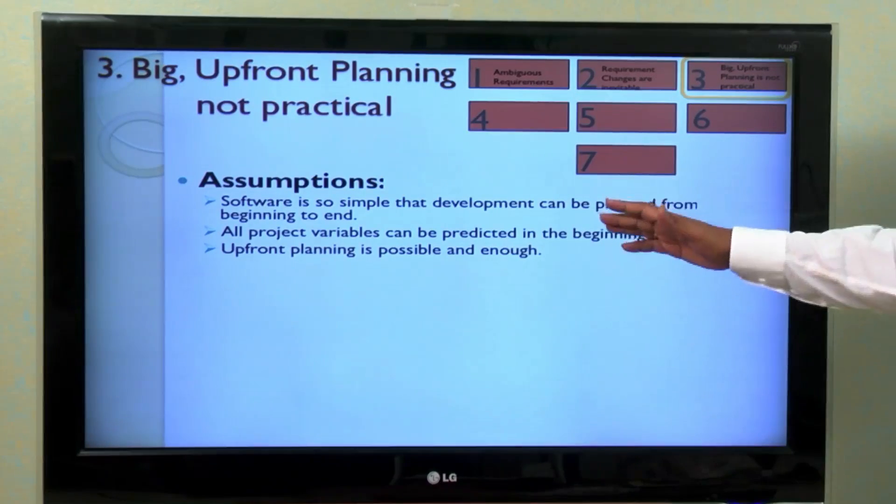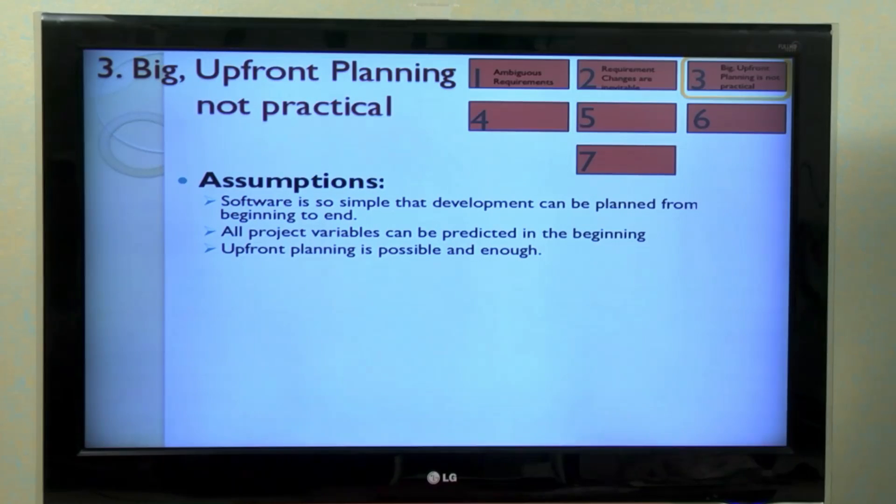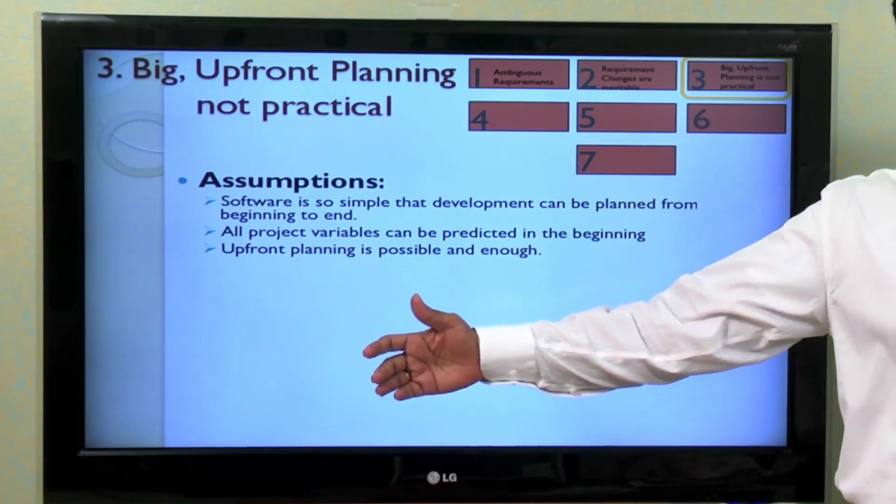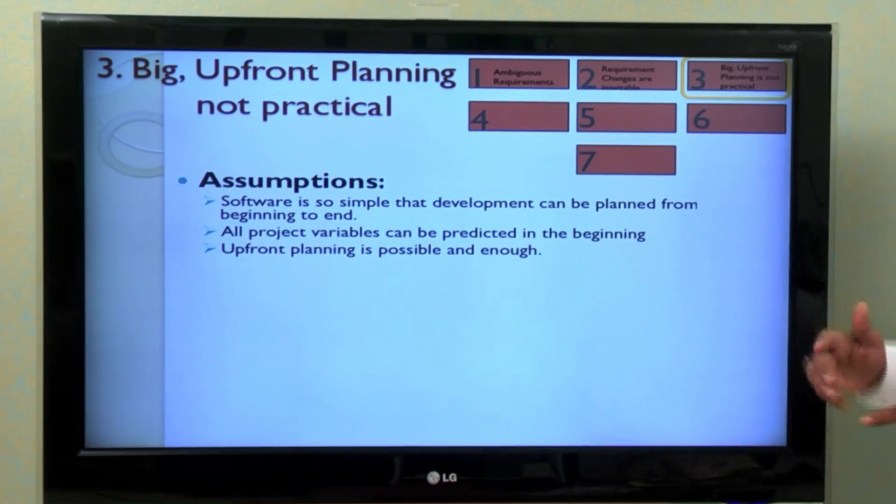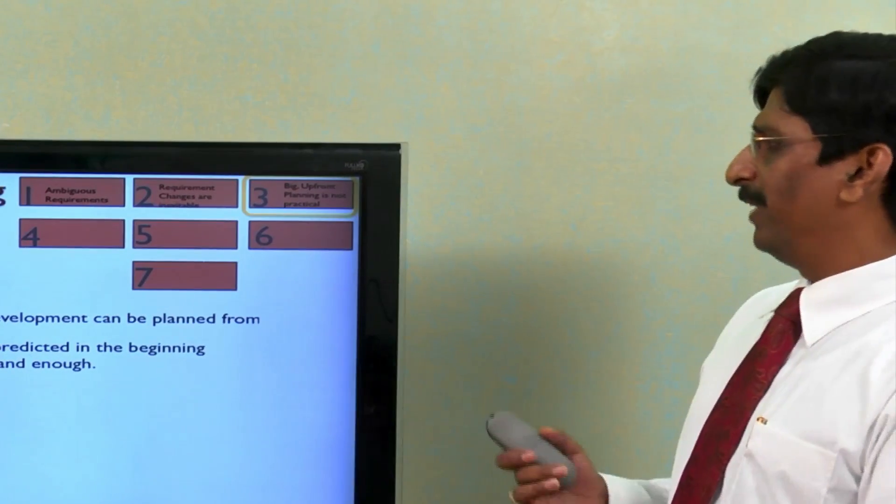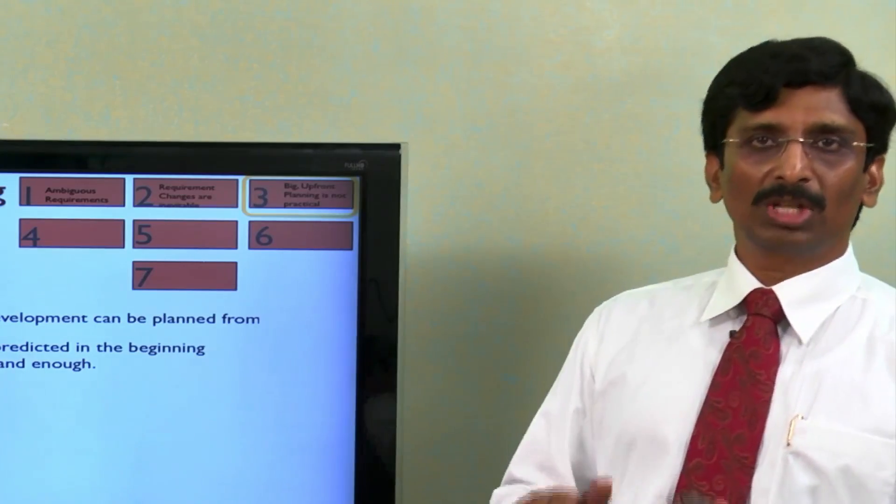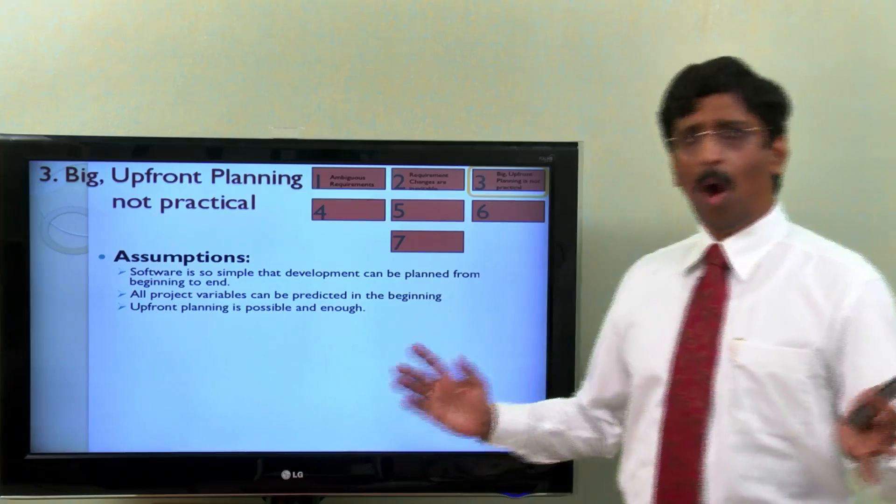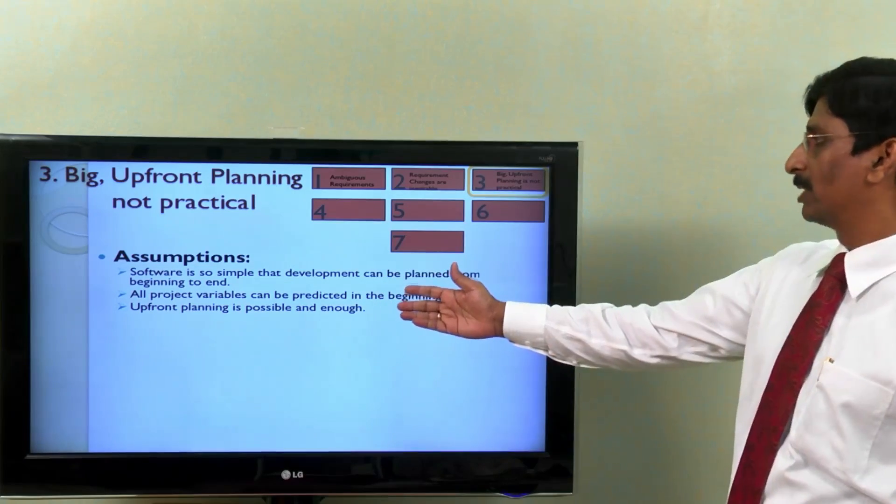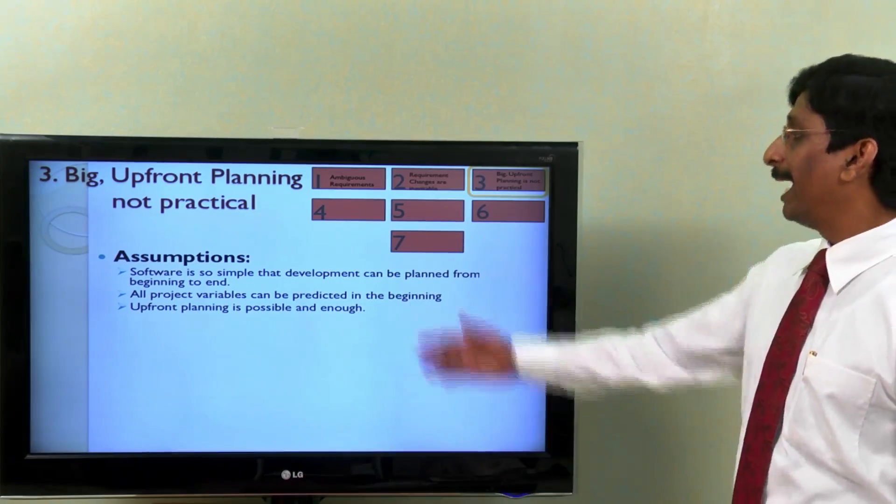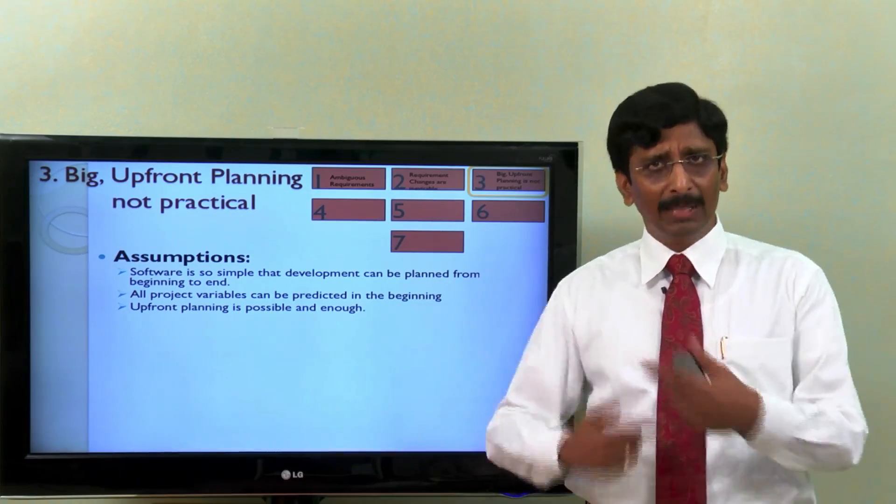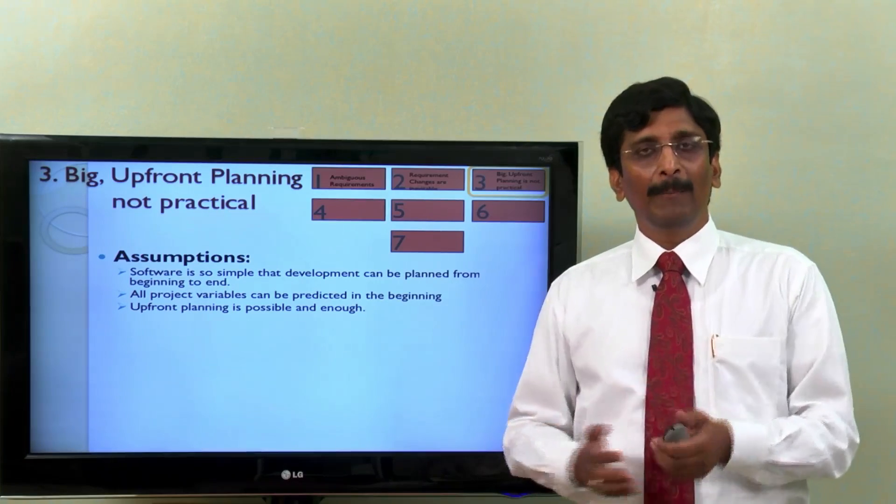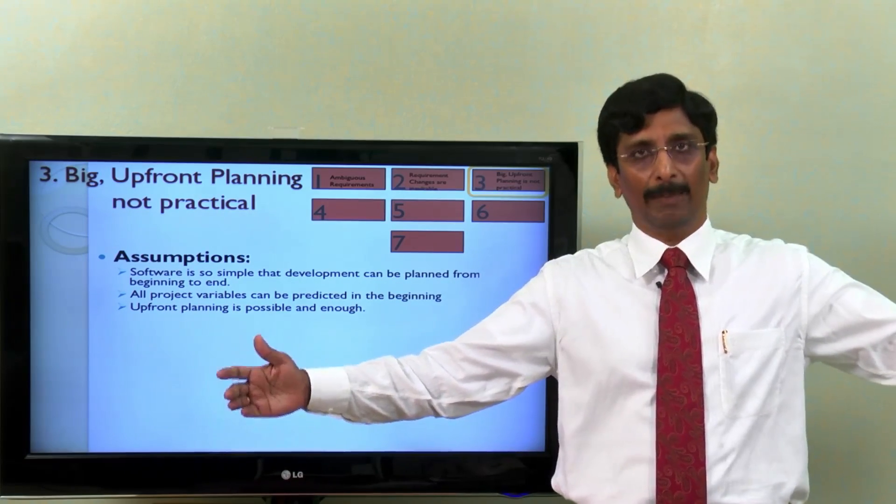So what are the assumptions? Why do we assume this way? We assume software is so simple that development can be planned from beginning to end without any problem. We also assume all project variables can be estimated or predicted in the beginning - project variables could be your scope, your size, your cost, your resources, your schedule, your risks, everything. We also assume upfront planning is possible and enough.